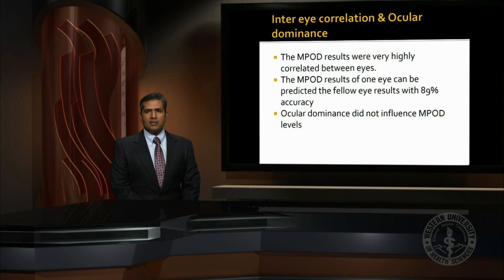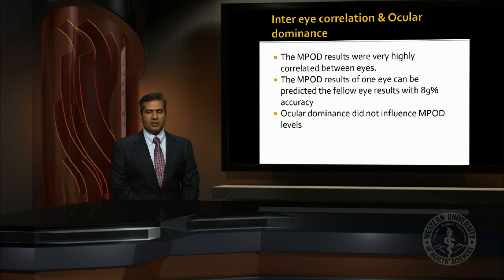The right eye and left eye correlated highly, and the results from one eye could predict the results of the other eye with an accuracy of 89%. Ocular dominance did not influence macular pigment optical density levels.